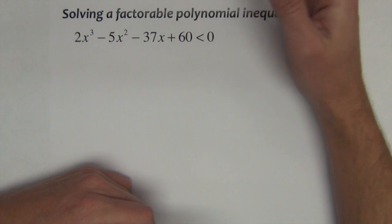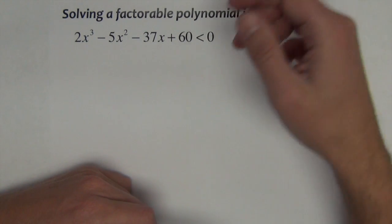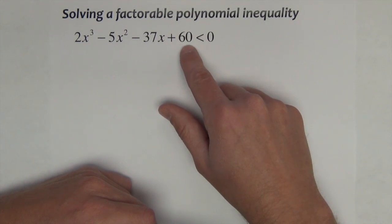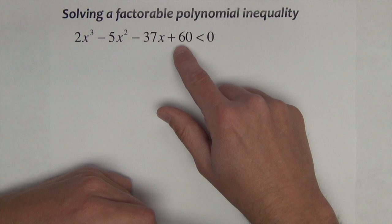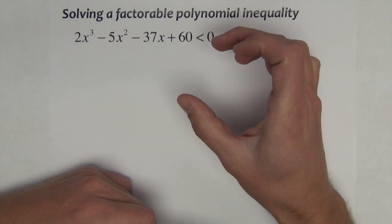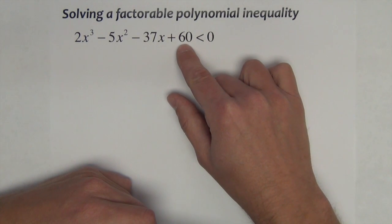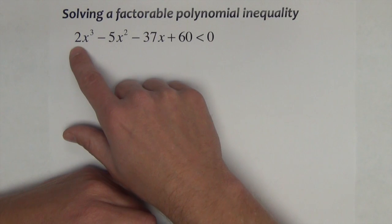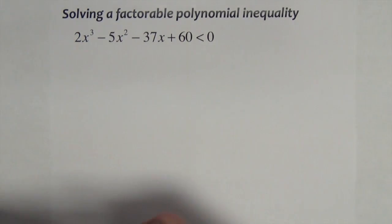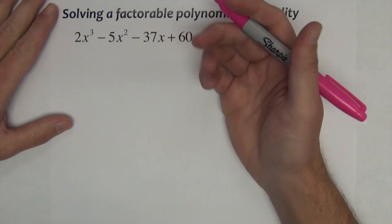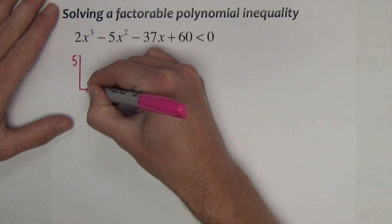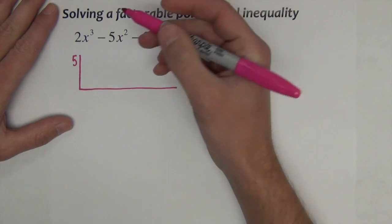I'm not going to go over in detail how to do the rational zeros theorem as we've done it before. But first I would list all the factors of 60: 1 times 60, 2 times 30, 3 and 20, 4 and 15, 5 and 12, 6 and 10. It could be any one of those numbers divided by all the factors of 2, which are 1 and 2. So I would narrow those options down by sketching a graph of this function on the calculator. When I did that, I found that the graph crosses the x-axis at 5. So I would use synthetic division to divide out 5 as a zero of this polynomial.